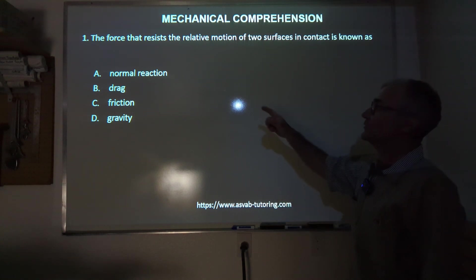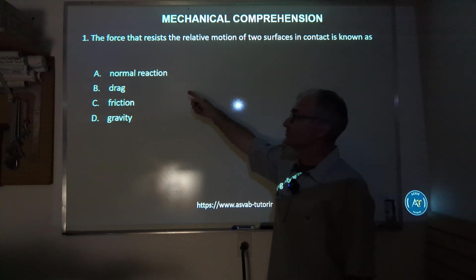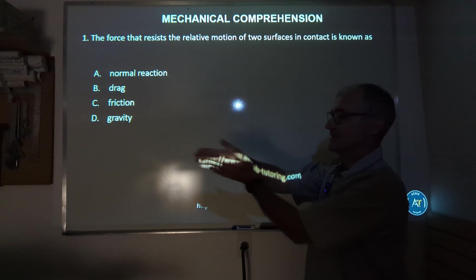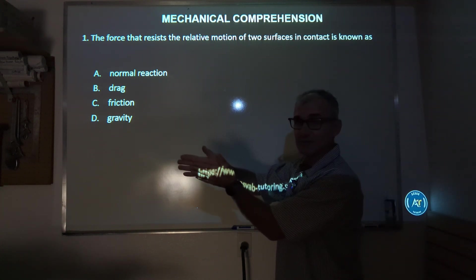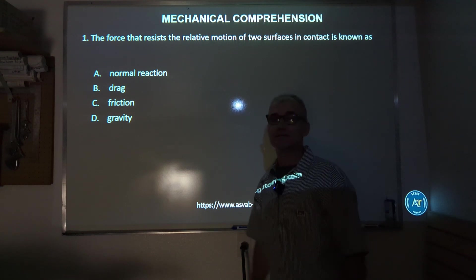Problem number one: the force that resists the relative motion of two surfaces in contact is known as normal reaction, drag, friction, or gravity. What we're talking about is the resistance of things moving, so the correct answer after you do it on your own is C, friction.